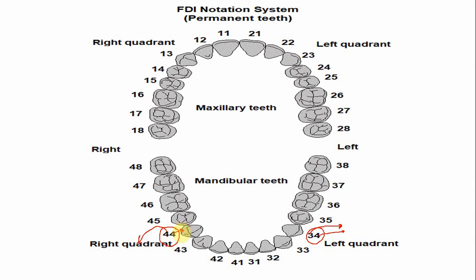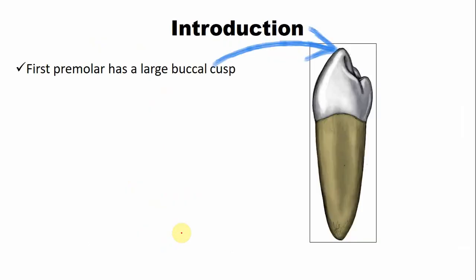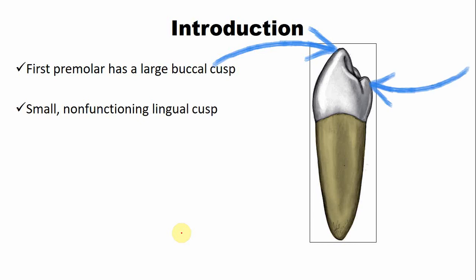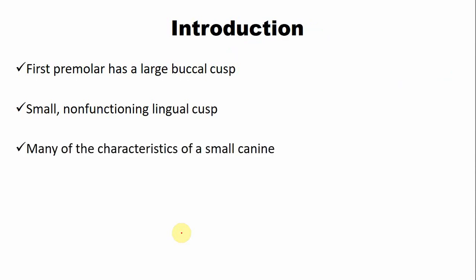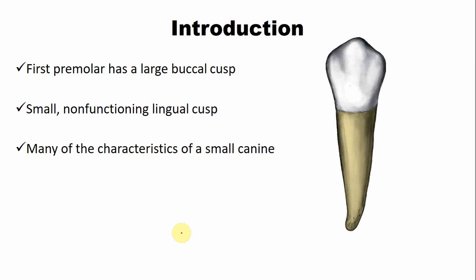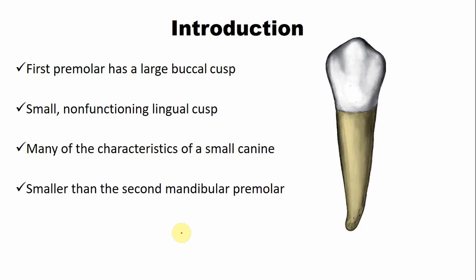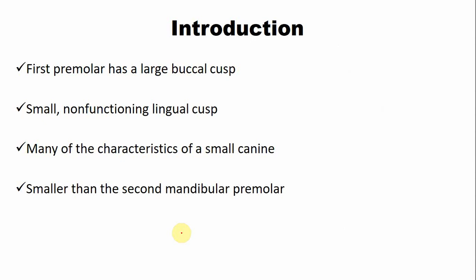You can see more details about the tooth numbering system in the description of this video. The mandibular first premolar has a large buccal cusp, as seen from the proximal aspect, and a small non-functioning lingual cusp. Sometimes this small cusp appears like a small cingulum, which is why it shares many characteristics of a smaller canine. This tooth is smaller than the mandibular second premolar.